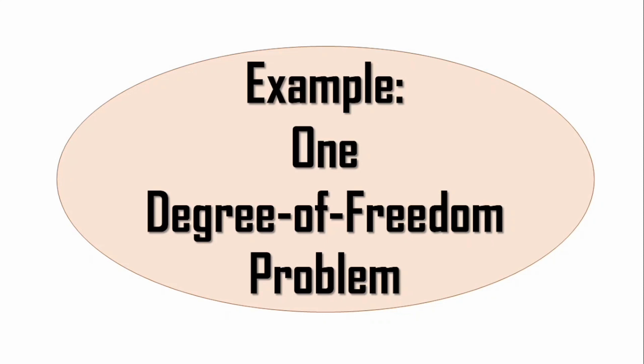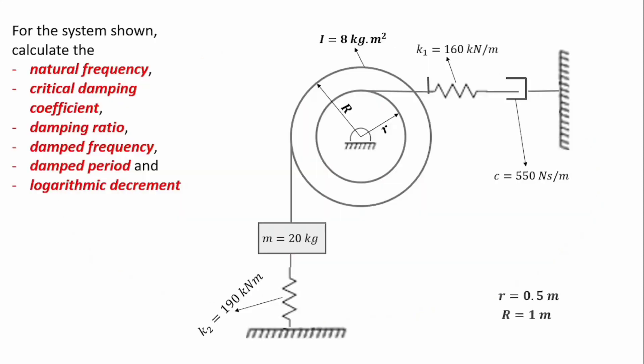In this video, I will be presenting a solution to a problem that borders on a one degree of freedom system. We will be calculating some variables useful in the analysis of a vibrating system, including the natural frequency, the critical damping coefficient, the damping ratio, the damped frequency, the damped period, and the logarithmic decrement.